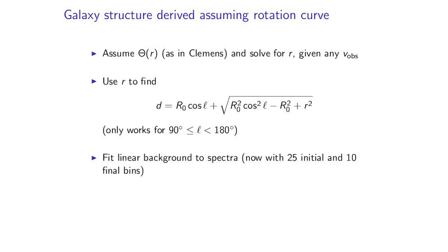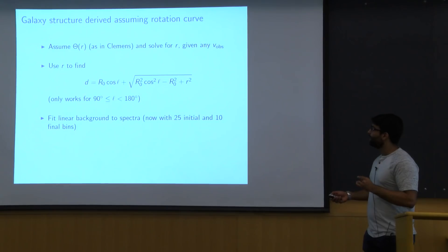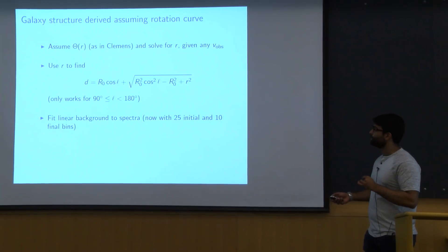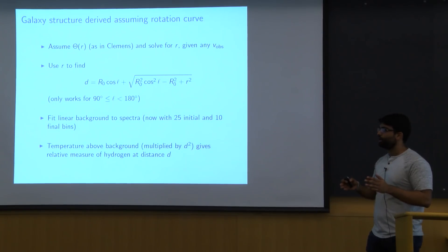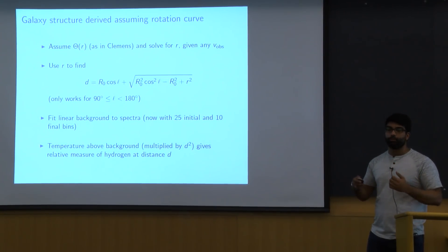And again, we're going to fit these to a linear background, now with 25 initial bins and 10 final bins. And we're going to say the temperature above the background multiplied by the distance from us squared, this is just because of an inverse square power law, we're going to say that that gives us a sort of relative measure of how much hydrogen must be there. And as a result, how much emission that we're seeing.